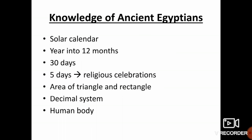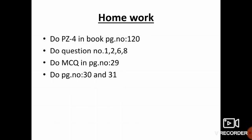So, are you clear about amusement, trade and knowledge of ancient Egyptians? This is time for your homework. Do practice exercise 4 in the book on page number 120 and do question numbers 1, 2, 6 and 8. Do the MCQs on page number 29 and do page numbers 30 and 31.